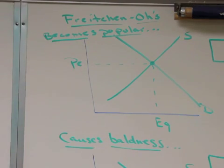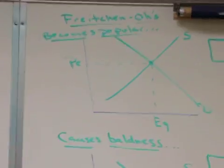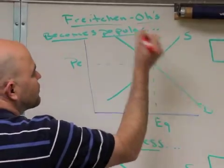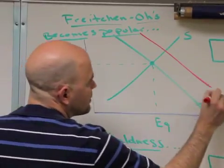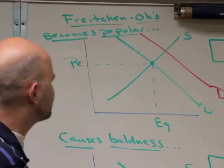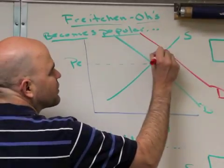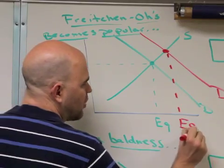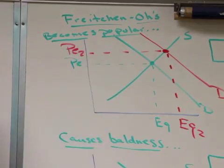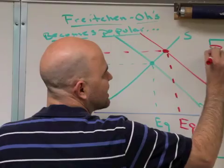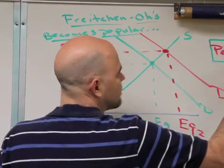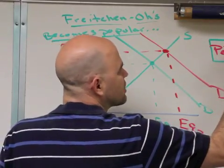Here's my product: I've got Frichino's, which is a new cereal. It's becoming very popular, so demand is going to go up. Demand going up is a shift towards the higher quantities — I'll call this demand curve two. Now we have our new equilibrium point: our new equilibrium quantity has increased, and our new price equilibrium has also increased. So PE has gone up, and EQ has also gone up.